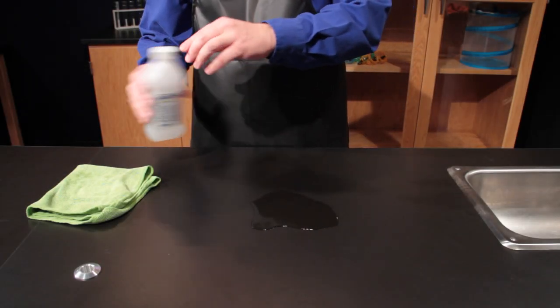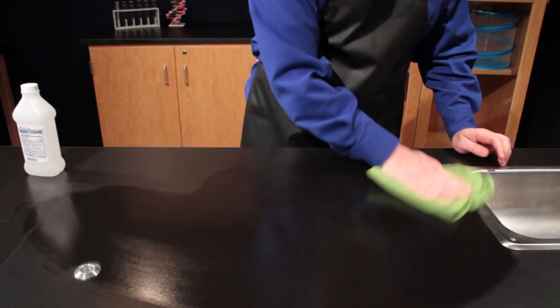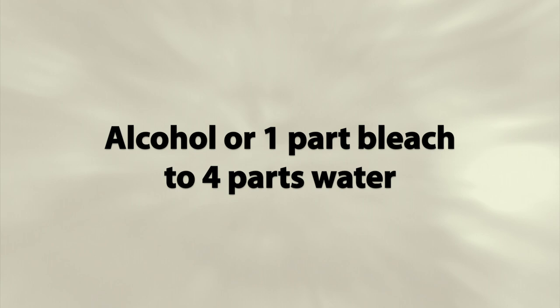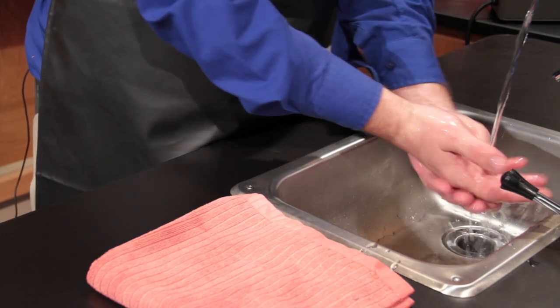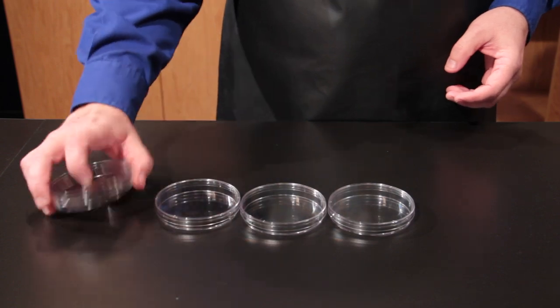While waiting for the agar to cool, prepare your work area for pouring plates. Choose an area that is free of air movements. Clean the area with alcohol or a solution of one part household bleach to four parts water. Wash and dry your hands. Once the work area has dried, put out your sterile plates.